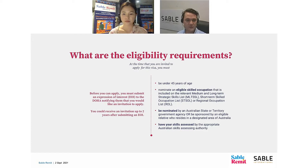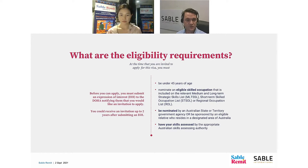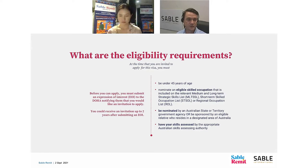The eligibility requirements of the 491 visa are obviously very important. Before you can submit a visa application under 491, you must be invited. To get an invitation, you must first submit an Expression of Interest through the Department of Home Affairs SkillSelect site. Your Expression of Interest is live for two years — it sits in the system for up to two years, during which you can be issued an invitation to apply.